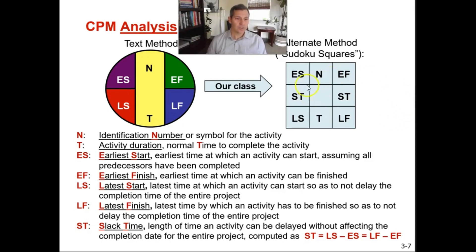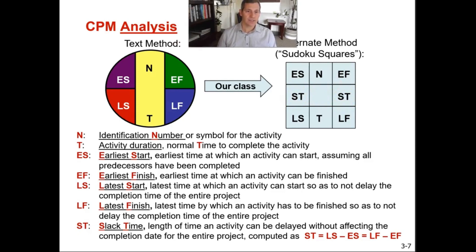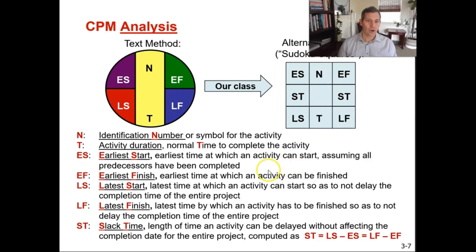Slack time is the length of time an activity can be delayed without affecting the completion date for the entire project. We compute slack time by taking LS minus ES (latest start minus early start), which gives you your slack. You can also compute it as LF minus EF (latest finish minus early finish) — and that will give you the same number. A key piece of advice: if you ever get a different slack time on the right versus the left, you have done it wrong. The slack time on both sides must always be exactly the same number.